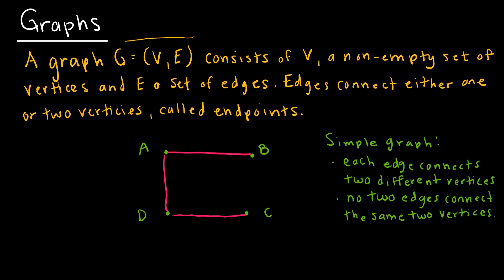And notice the way that we write that, V, E. And essentially, we're saying edges are going to connect either one or two vertices, and we tend to call those endpoints. So I've drawn an example for you here, and this is just called a simple graph. It's simple because each edge connects two different vertices, and no two edges connect to the same two vertices.